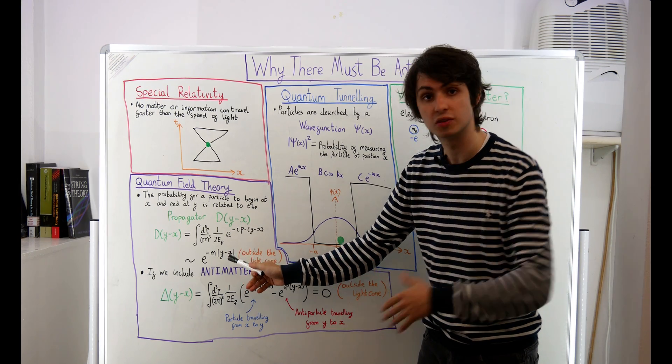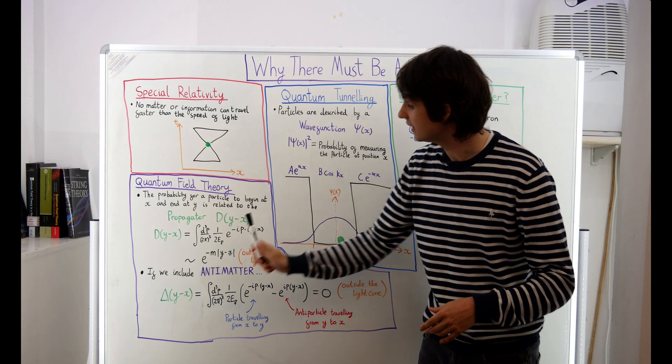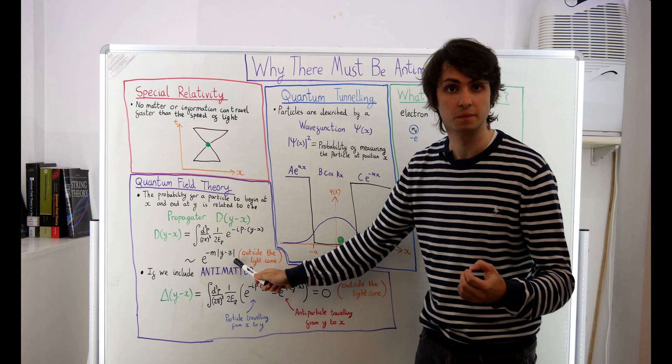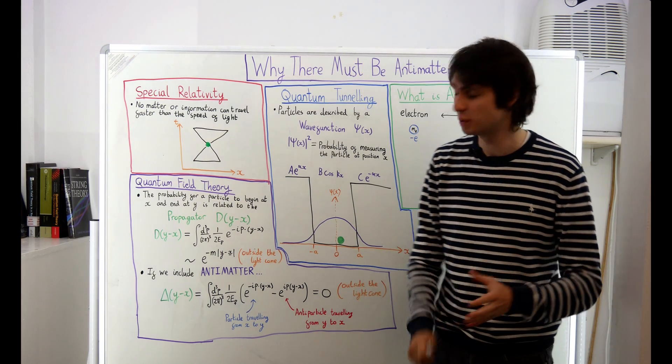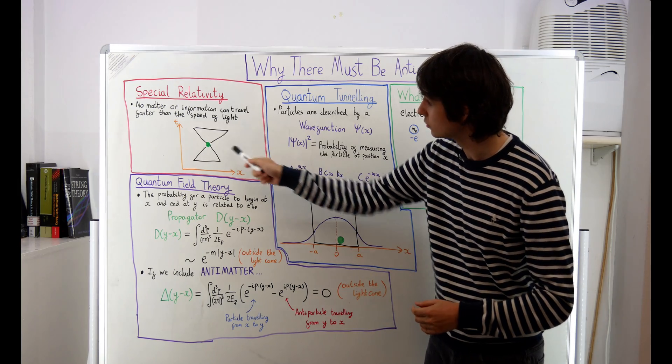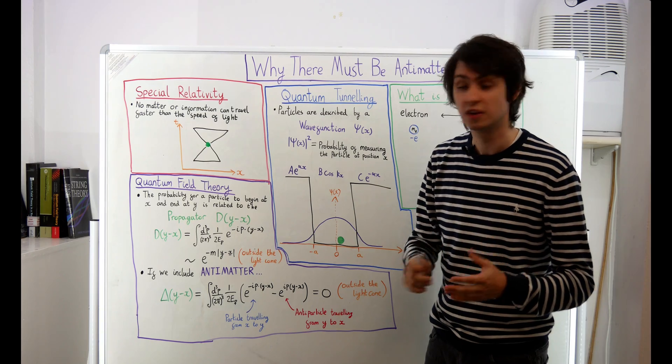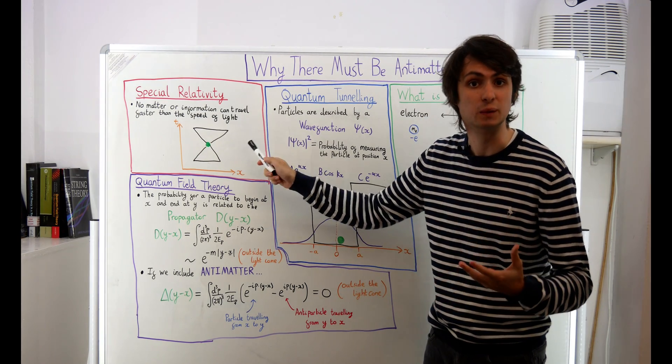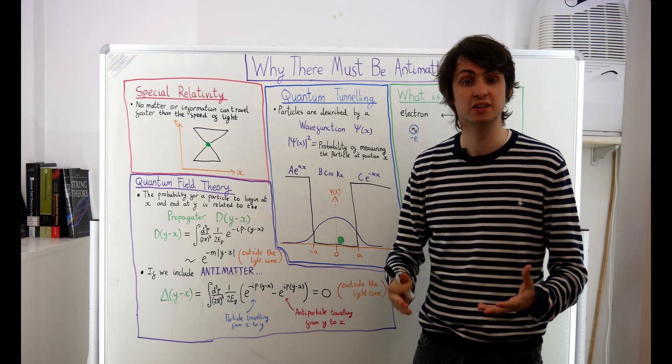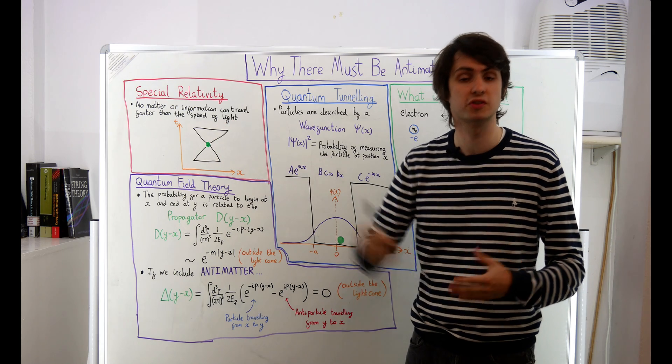From this, we can see that the probability of finding a particle outside of its light cone is exponentially decaying, which means that it's small, but non-zero. This is exactly what we saw when we looked at the quantum potential well. Classically, we have a region here that the particle is forbidden from entering, but there's a small chance that it will leak out into there anyway. Does this mean that special relativity is wrong? Do we just need to accept that there's an exponentially small chance that particles can travel faster than the speed of light?